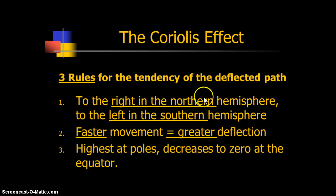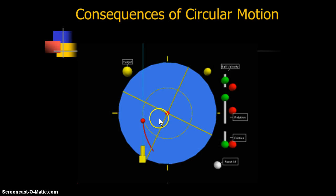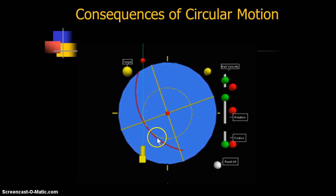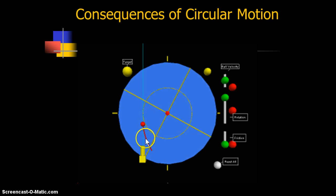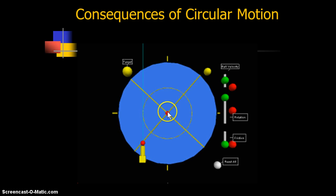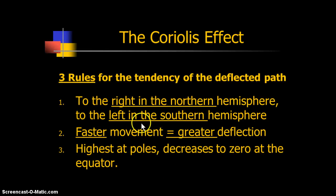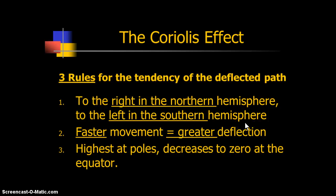Rule one: the deflected path is always to the right in the northern hemisphere on Earth, and to the left in the southern hemisphere. If we're in the northern hemisphere and the Earth is rotating this way, the ball appears to be deflecting right. If we were standing on the other side of the Earth, the Earth would appear to rotate the other way, and the ball would deflect the other way. Rule two: faster movement equals greater deflection. The faster that object moves, the faster it appears to deflect to the right — if that ball was moving faster in either of those videos, the deflection would appear greater.